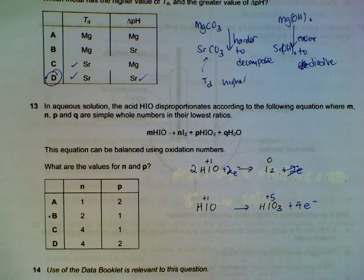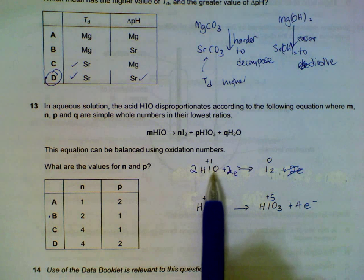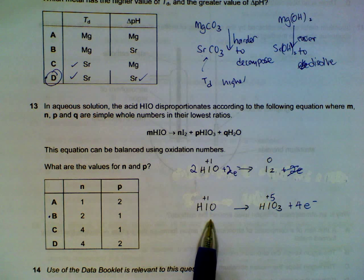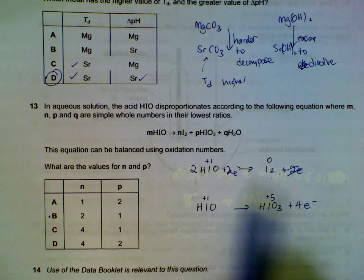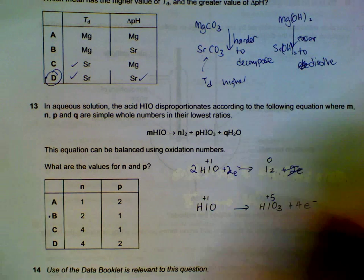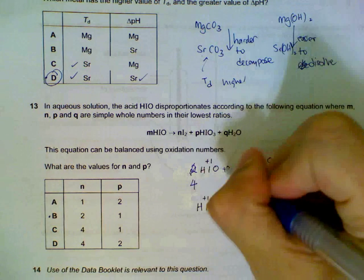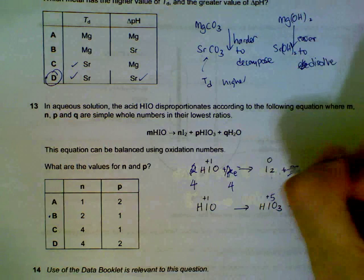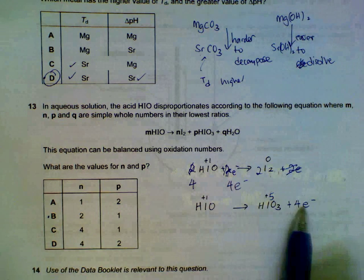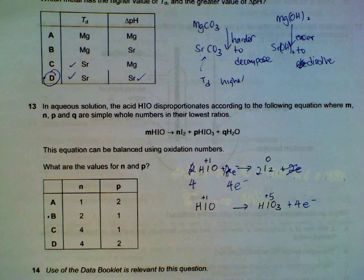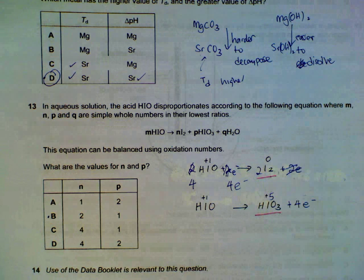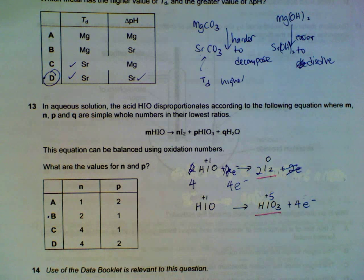So once we have this, we know that the reduction half equation can be merged with the oxidation half equation if the electrons are the same amount. So I multiply this by 2 throughout becomes 4, 4, 2, so that we have the same number of electrons. And then we will know that for 2 moles of I2, 1 mole of HIO3 will be produced.